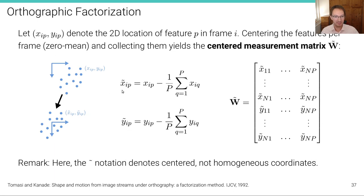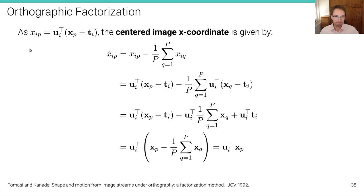Okay, so x̃ip are the centered x-coordinates of point p in image i. Now, as we have this expression from before, the expression for projecting a 3D point onto the i-th image plane, the centered image x-coordinate is given as follows. We have x̃, this is the centered notation, which is xip minus the mean of all the 2D image features in that frame. Now we can plug this in here. So we have the expression here for xip and we have this expression here for xiq.